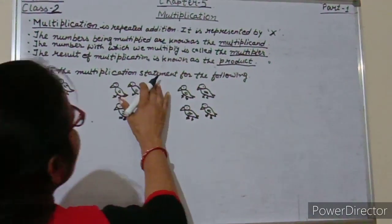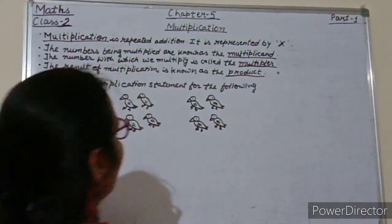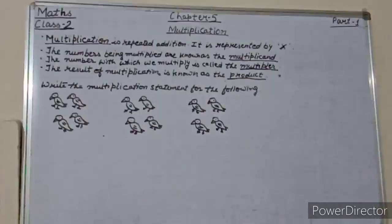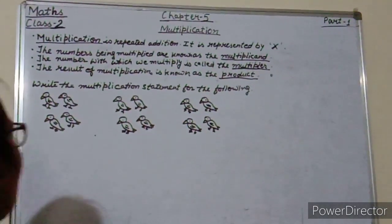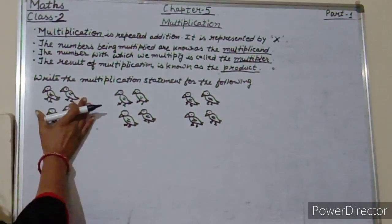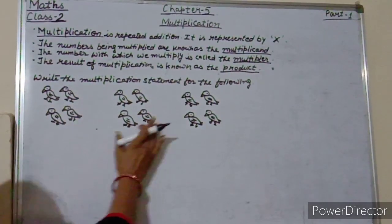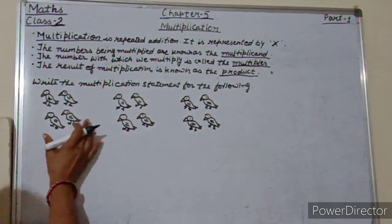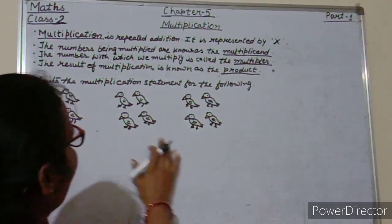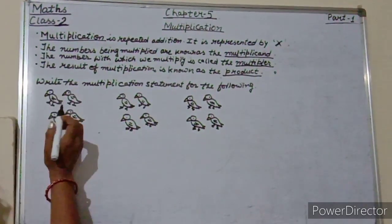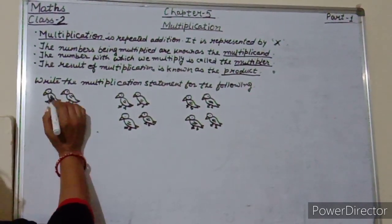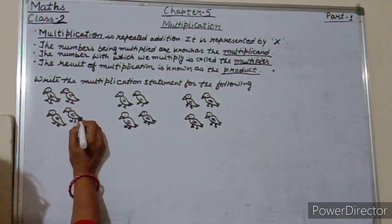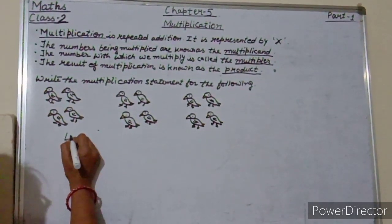Write the multiplication statement for the following. How many birds are there in each group? In each group, count: 1, 2, 3, 4 — so here we will write 4.